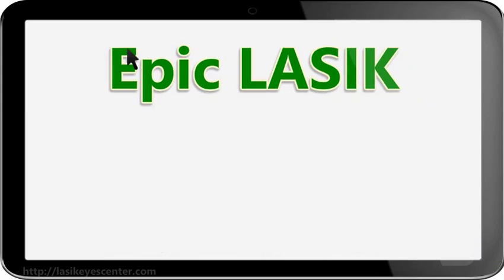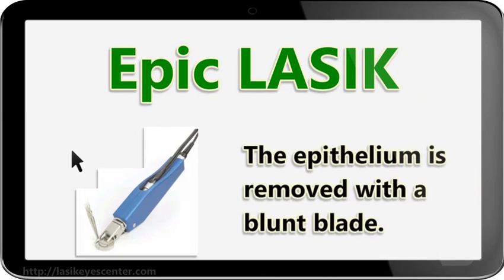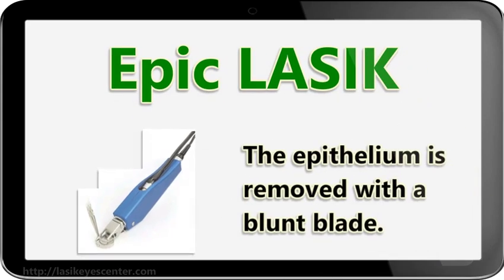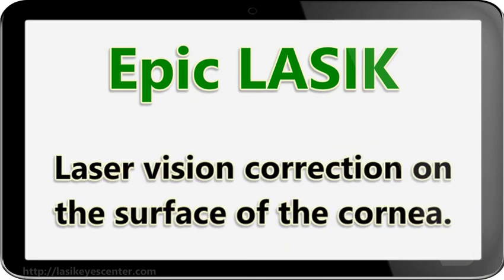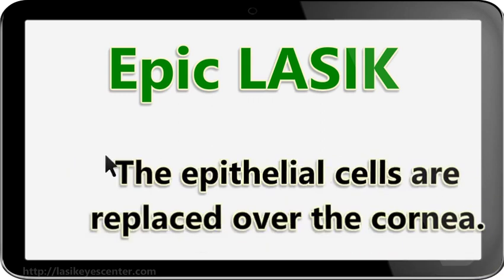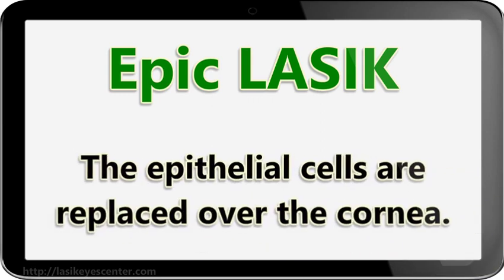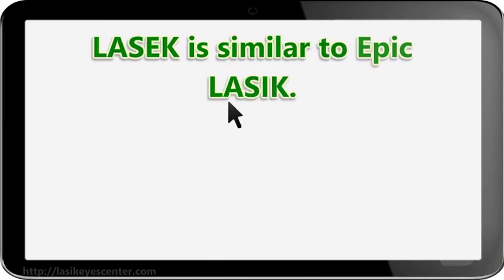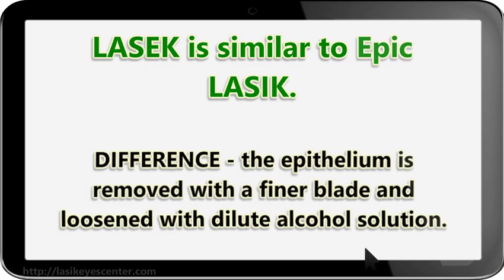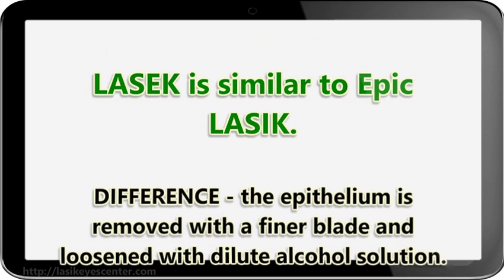In an EpiLASIK surgery, a blunt plastic separator is used to remove the epithelium. Laser vision correction is performed only on the surface of the cornea. The epithelial cells are then replaced over the cornea. LASIK is similar to EpiLASIK; the difference is that the epithelium is removed with a finer blade and loosened with a dilute alcohol solution.